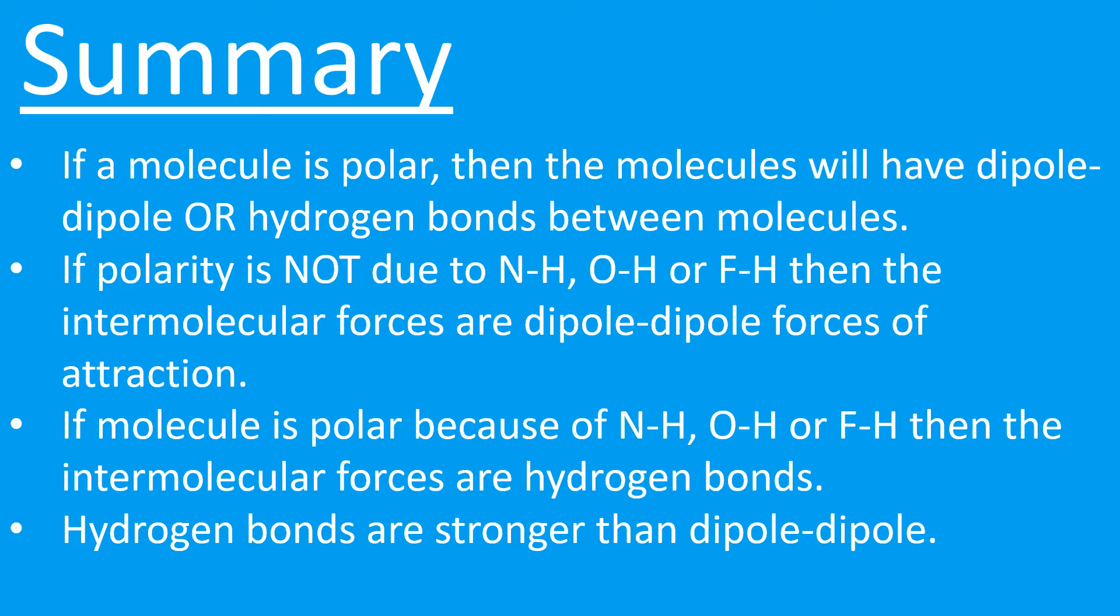Hydrogen bonds are stronger than dipole-dipole, and dipole-dipole are stronger than van der Waals. So that's the order of strength. You would expect something with hydrogen bonds to have a higher boiling point than something with dipole-dipole, and likewise something that has dipole-dipole you would expect to have a higher boiling point than something that only has van der Waals. This is because it's a stronger bond. More energy would be needed to break that bond.